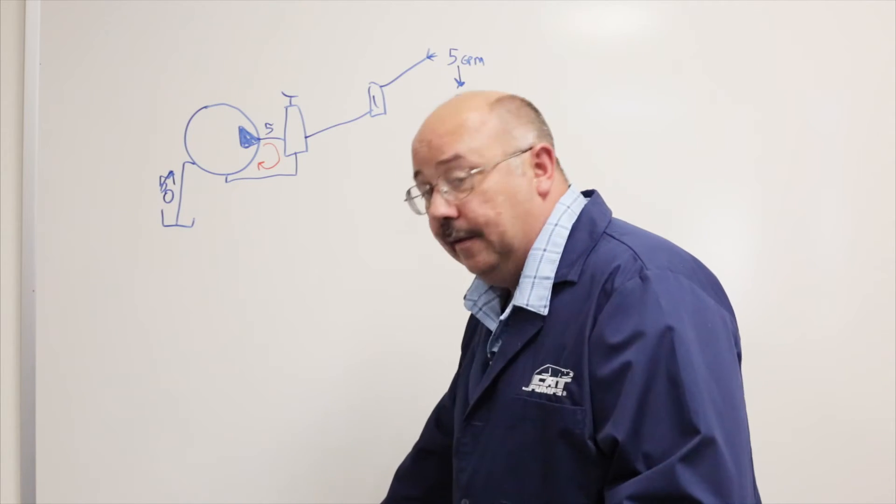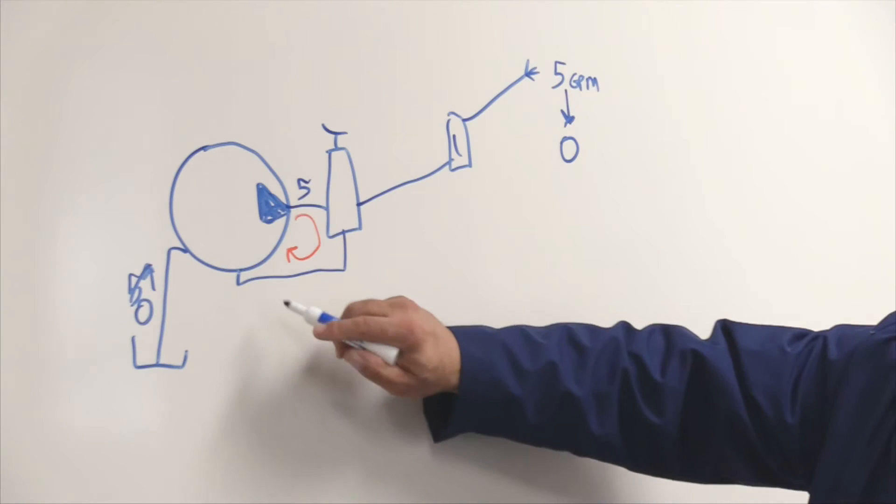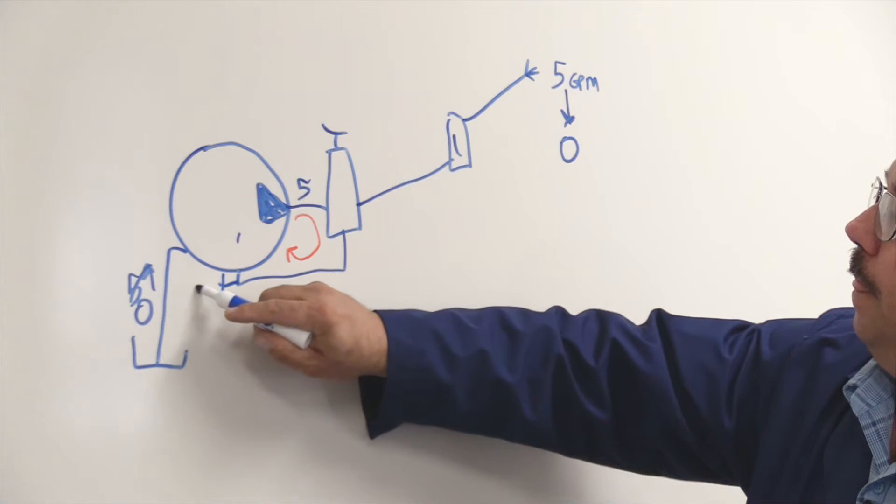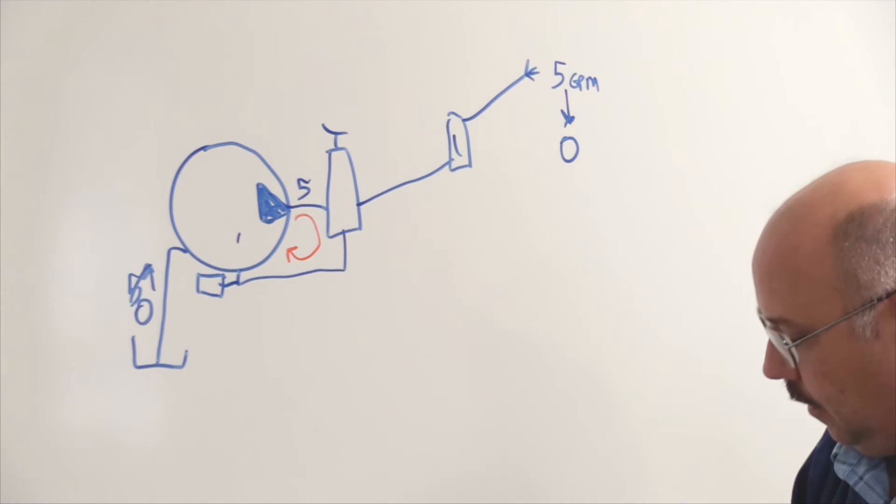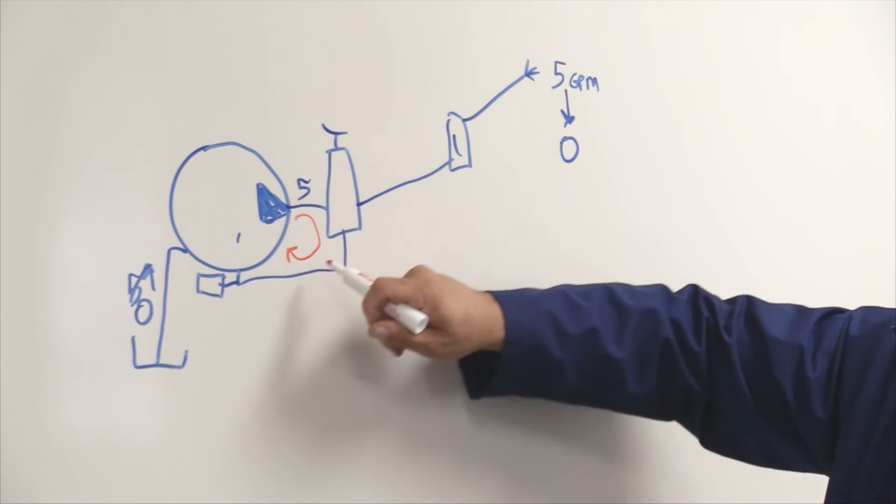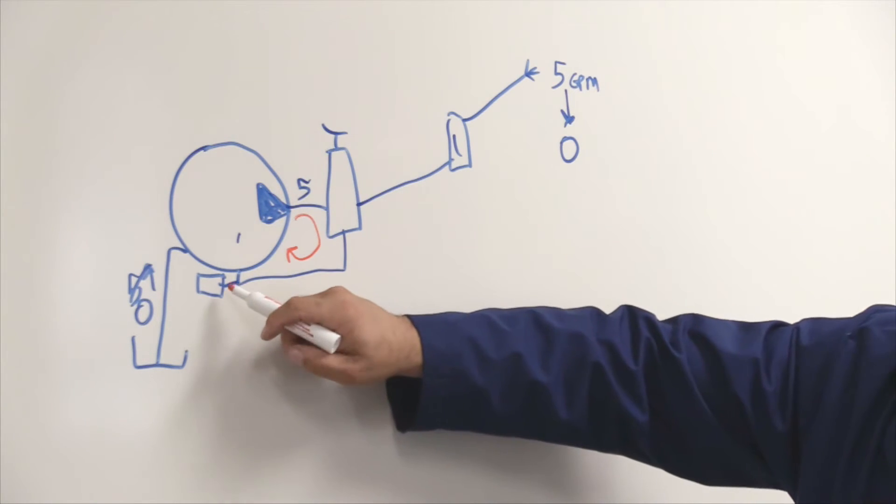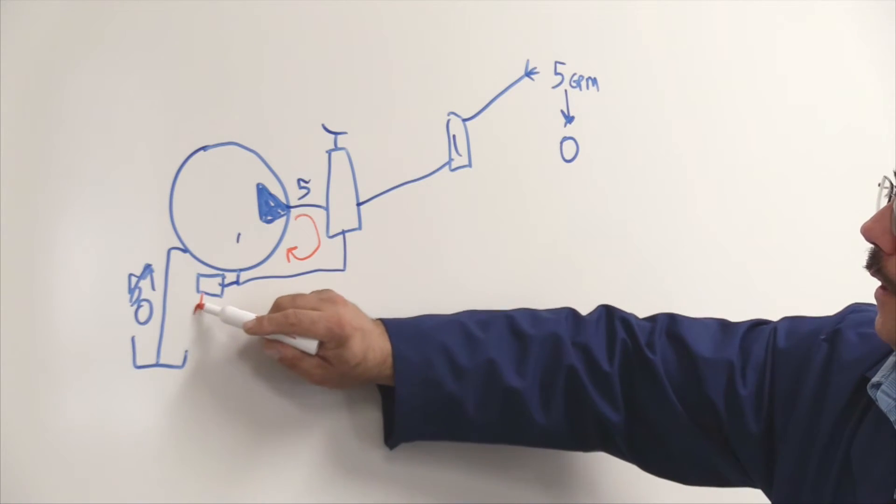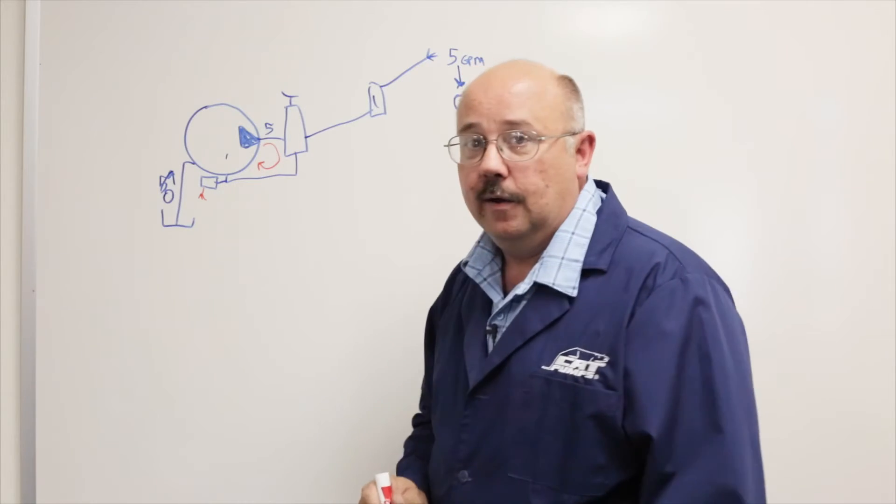And along comes then the thermal valve. And what we do is we'll take where this tees back into the pump, we'll add a thermal valve right there. And what happens is, as this loop is running and the temperature rises, this thermal valve will watch it. And as soon as it gets to a certain point, it will open and discharge some water out there.